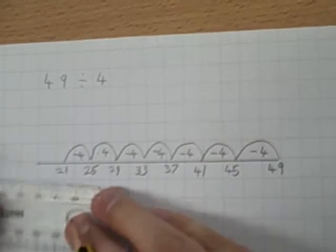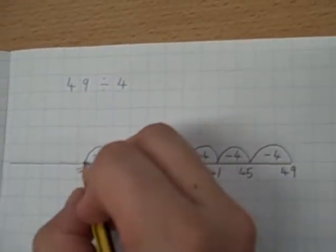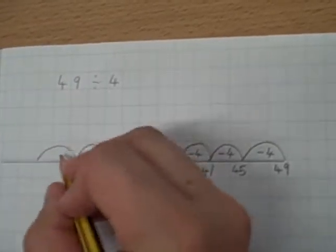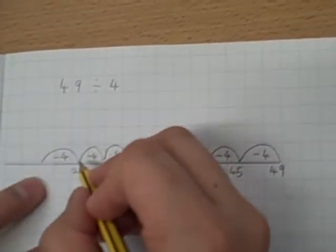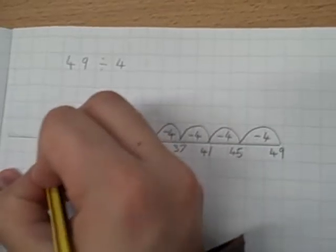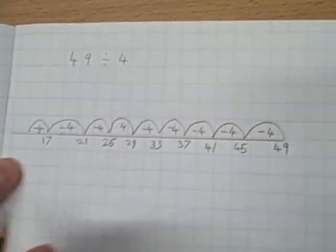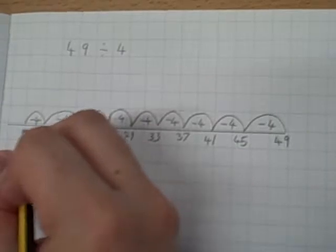I'm going to run out of space, so I'm going to extend my number line. 21, take away 4, 17. Take away 4, 13.